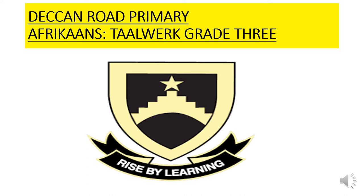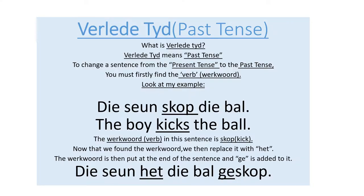Good day, children. Today's Afrikaans lesson is on Talbac, so we are going to look at a language aspect. Firstly, what is faliratet? Faliratet is past tense. So when you want to change a sentence from the present tense to the past tense, you must firstly find the verb or the verb word. This is your action word.